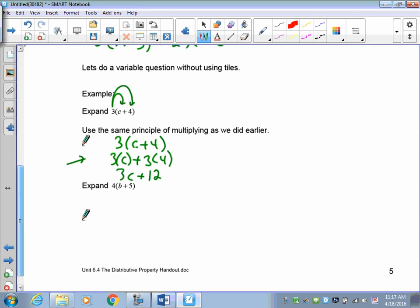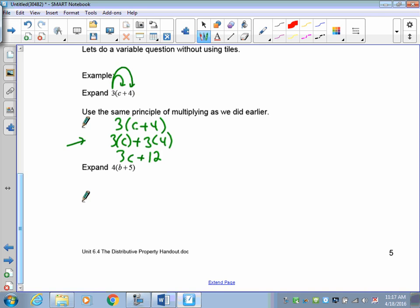All right? Okay, you do the next one. 4 onto b plus 5. All right? So 4 onto b plus 5, we have 4 onto b plus 5, 4 onto b plus 4 onto 5, so 4 b's plus 4 fives is 20. There you go. It's actually pretty straightforward.